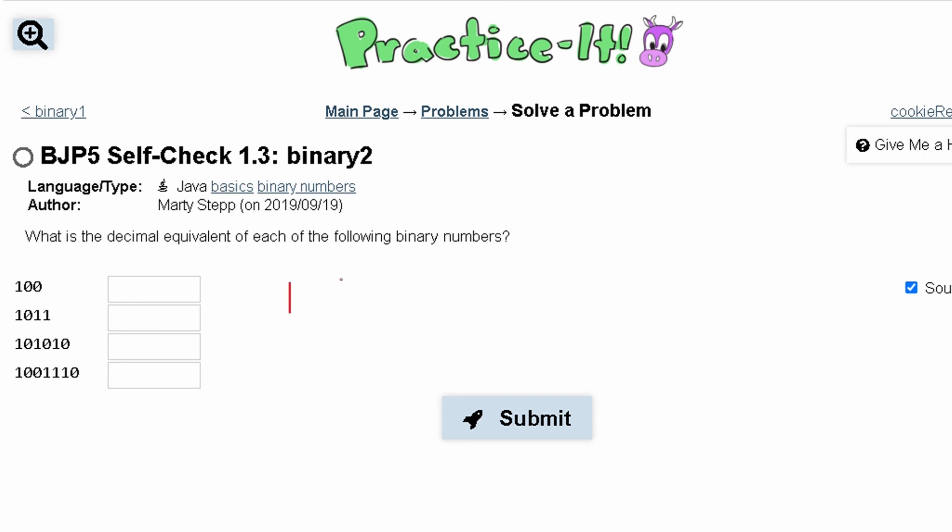We're given the binary number 100 and we need to find the decimal equivalent. We're given 1 0 0, this is of base 2, so this is going to be 2 to the 0th, this is 2 to the 1st, and this is 2 to the 2nd. Now we multiply 2 to the 2nd by 1 and we get 4. We get 0 here and 0 here, so our answer is just 4. This is the equivalent for the number 4.